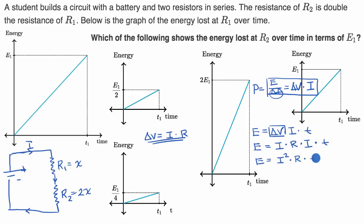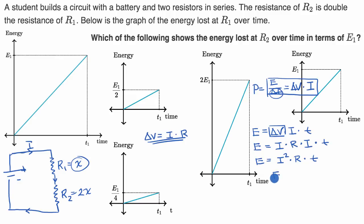We already know from the graph that at time T1, we have an energy dissipated of E1, and that's with a resistance of X ohms. So we can write: E1 equals I squared times X ohms times T1.